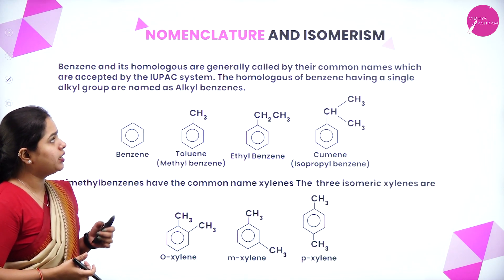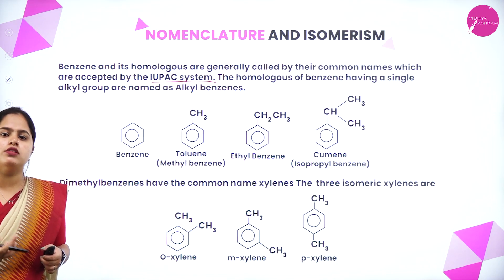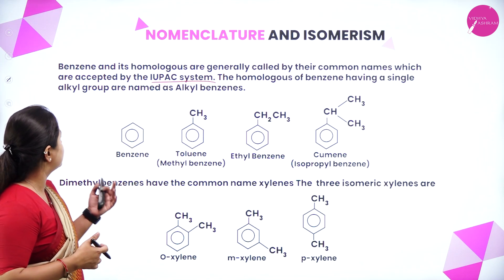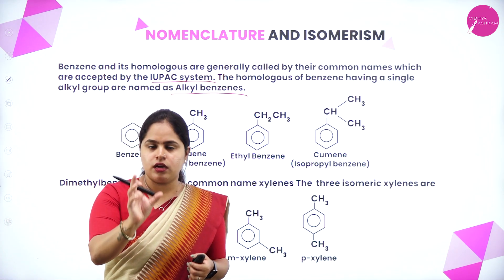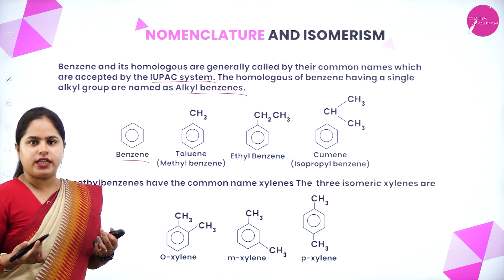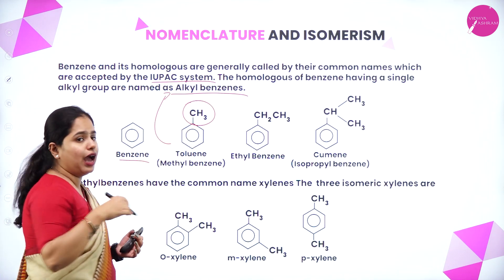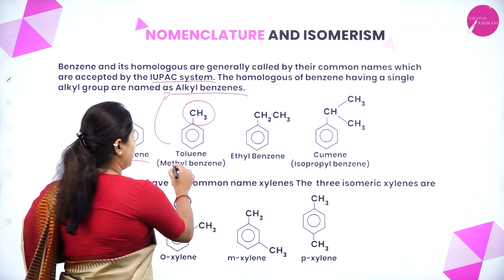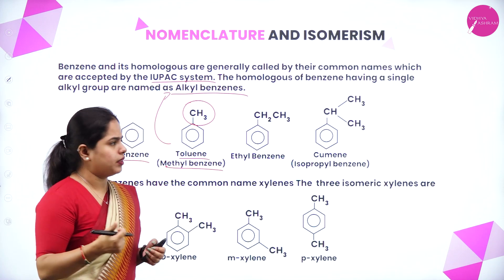Benzene and its homologues are generally called by their common names, which are accepted by the IUPAC system. The homologues of benzene having a single alkyl group are named as alkyl benzene. So with a methyl group, the name will be methyl benzene — that is the IUPAC name — and toluene is the common name.